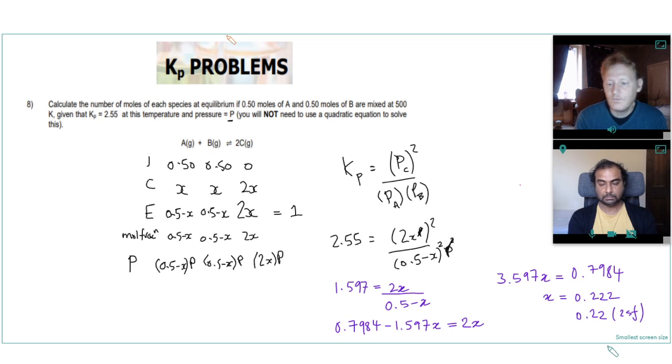Excellent. Now we know x, can we calculate the number of moles of each species at equilibrium? Yeah, so at equilibrium it's simply given by these expressions. I'll just write that out here again. At equilibrium, this one is 0.5 minus 0.22. This one is also 0.5 minus 0.22.